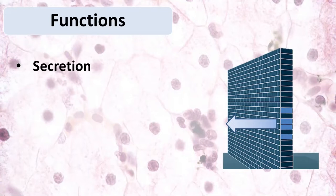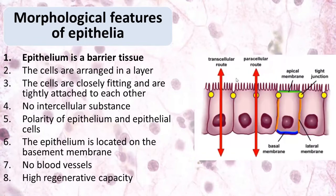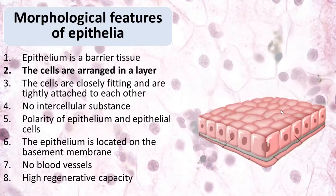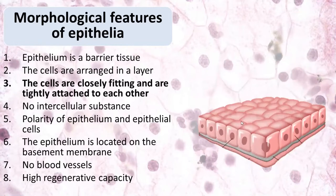There are some morphological features of epithelia which characterize the structure. First, epithelium is a barrier structure — it's a barrier between two environments, and all substances can get into our organism only via the epithelium. Second, the cells are arranged in a layer: all cells are closely fitting and tightly attached to each other, not located separately in the extracellular matrix. They are arranged in the layer like stones on the street, and they have special intercellular junctions that attach neighboring cells.